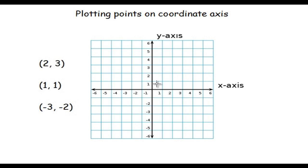The axis which is above the origin is the positive y-axis and the axis which is below the origin is the negative y-axis. So let's try to plot the point (2, 3) on the coordinate axis.